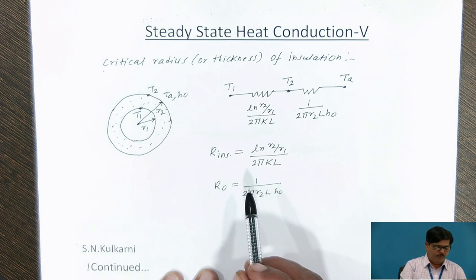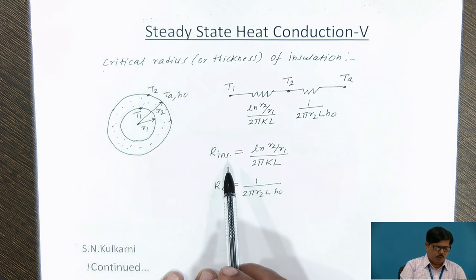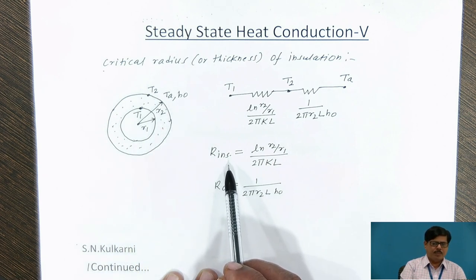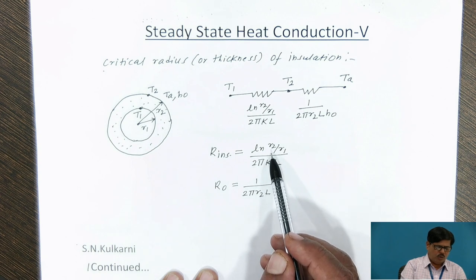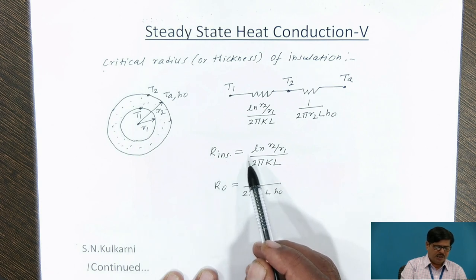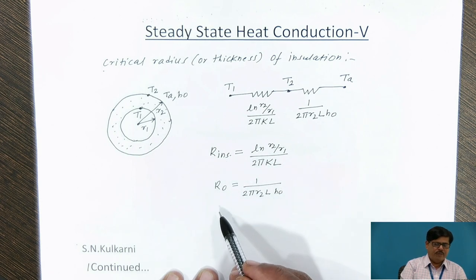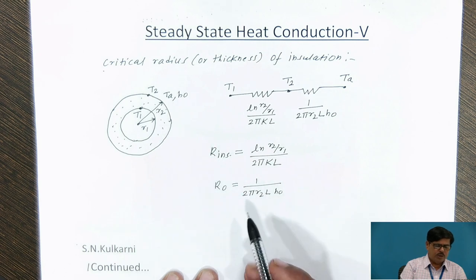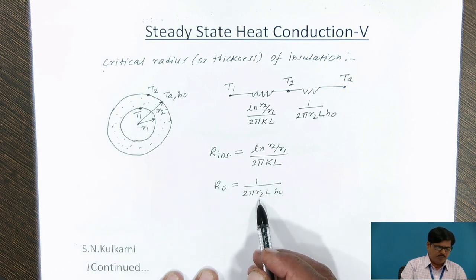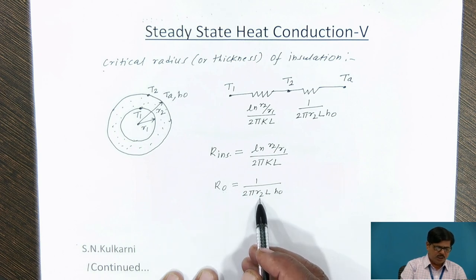If we observe, when we put more and more insulation, from the equation of this material resistance, as R2 will increase with the addition of insulation, the outer radius will increase, and the material resistance will increase. Whereas when we put more and more insulation on the outer surface of cylinder, this particular surface resistance decreases because R2 is in the denominator.